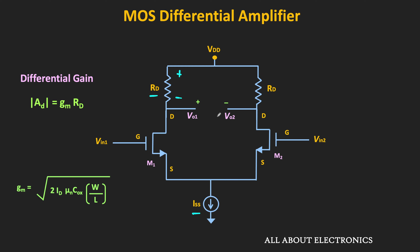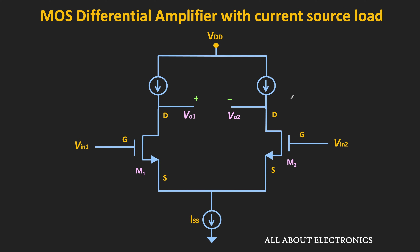First of all, let us replace these drain resistors by a current source, and for the time being, let us assume that these current sources are ideal. For the proper functioning of this differential pair, the value of this current source should be equal to Iss divided by 2. Now, with the help of small signal analysis, we can find the gain of this differential amplifier.